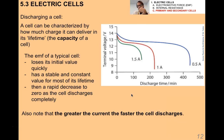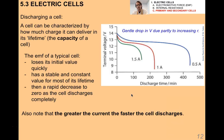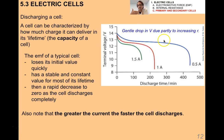Note that the greater the current, the faster the cell discharges — the more current you draw from it, the faster it wears out. The gentle drop in terminal voltage for most of the battery's lifetime is due partly to an increasing internal resistance. That increasing internal resistance comes as the cell gets older — it starts to corrode, the chemicals wear out — and all of that means internal resistance actually starts increasing slightly as the lifetime of the battery proceeds.